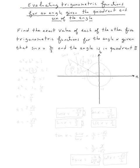The topic here is evaluating trigonometric functions for an angle given the quadrant and the sine of the angle. Find the exact value of each of the other five trigonometric functions for the angle x, given that sine x is equal to two-thirds and the angle is in quadrant two.